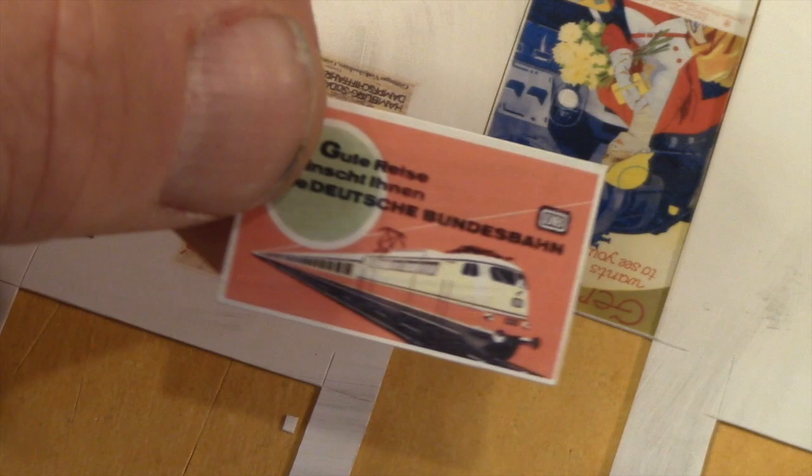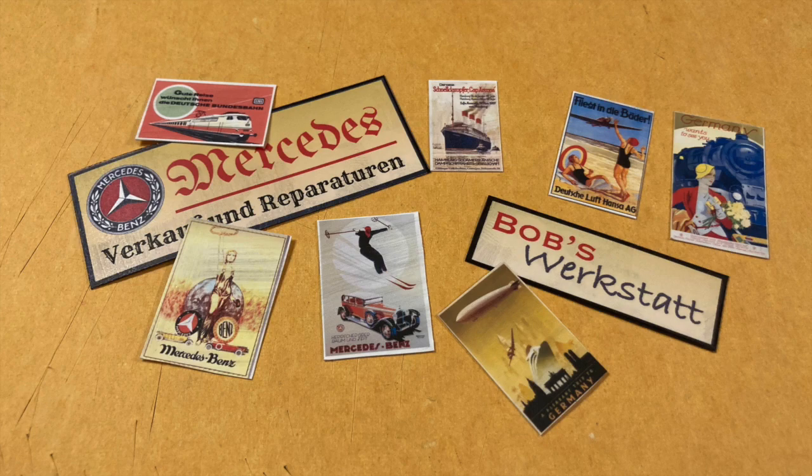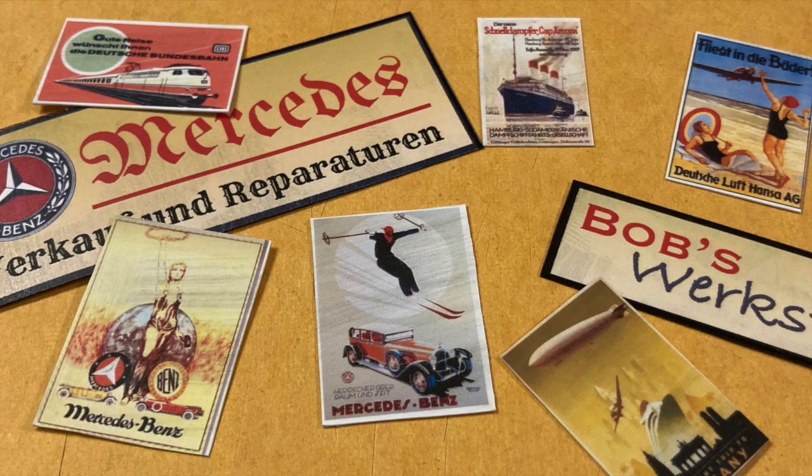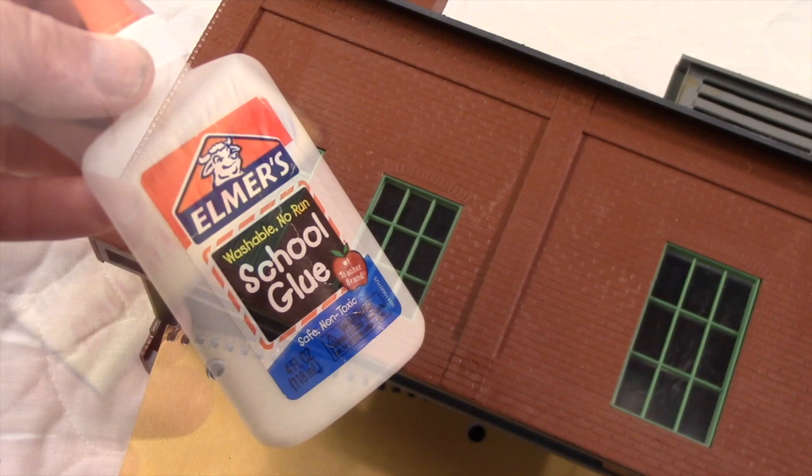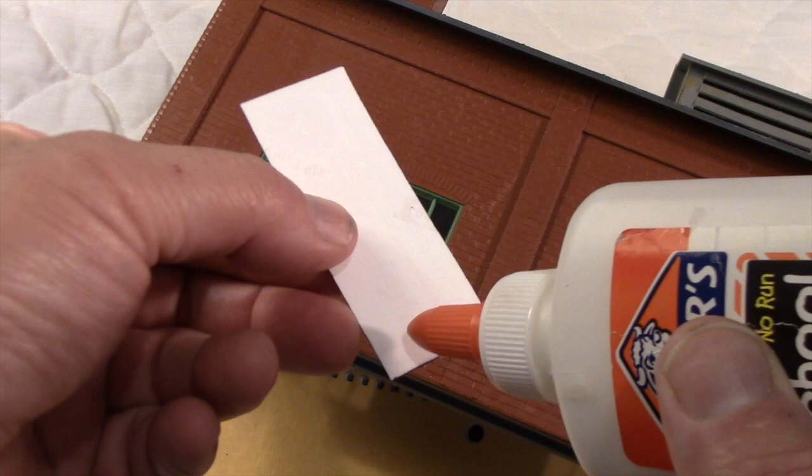You may have noticed a slightly European theme to the artwork I've chosen. That's because I plan to use these buildings as a backdrop for photographing some upcoming Mercedes and World War II diecast reviews. I'll just attach these mini posters using a few drops of Elmer's glue. If I ever choose to change them out, they'll be easy to remove, and any remaining adhesive on the plastic buildings can be washed away with warm water.